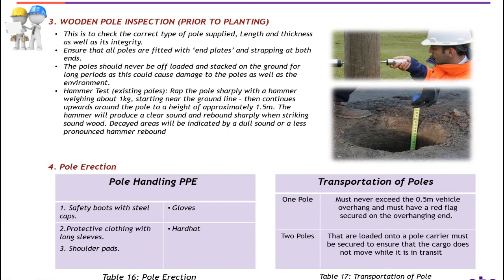Pole erection — PPE: Personal Protection Equipment for pole handling includes safety boots with steel cap, gloves, protective clothing with long sleeves, hard hat and shoulder pads. Transportation of poles: for one pole, it must never exceed 0.5 m vehicle overhang and must have a red flag secured on the overhanging end. For two poles loaded onto a pole carrier, they must be secured to ensure that the cargo does not move while in transit.